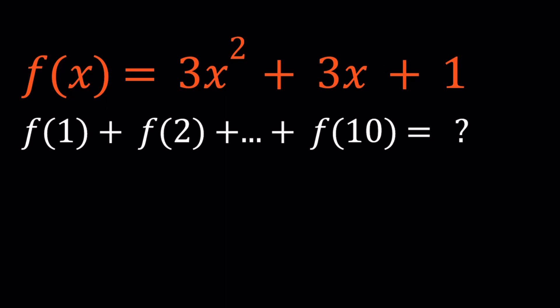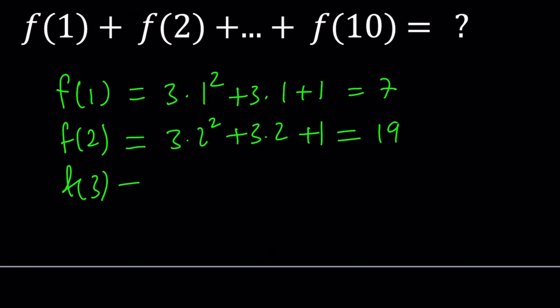In order to evaluate f of 1, I'm supposed to replace x with 1. That's going to give me 3 times 1 squared plus 3 times 1 plus 1, which equals 7. So we got f of 1, one-tenth of the task. What about f of 2? 3 times 2 squared plus 3 times 2 plus 1, that's equal to 19. And then f of 3, 3 times 3 squared plus 3 times 3 plus 1, and that's equal to 37. So on and so forth. Wait.